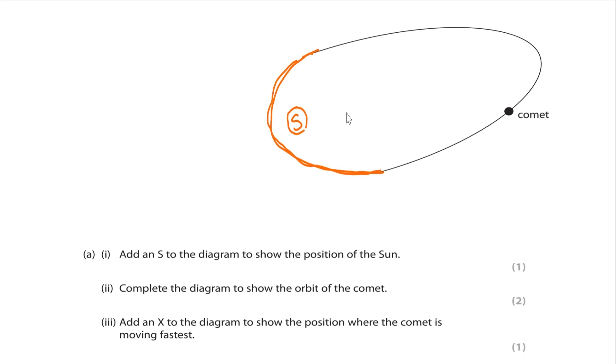Add an X to the diagram to show the position where the comet is moving fastest. Position X is here, or you can draw it here also, because here the distance between comet and Sun is shortest, so gravitational force of attraction is maximum.